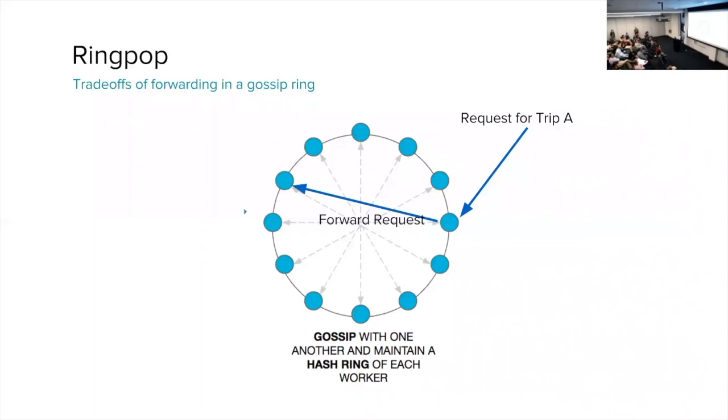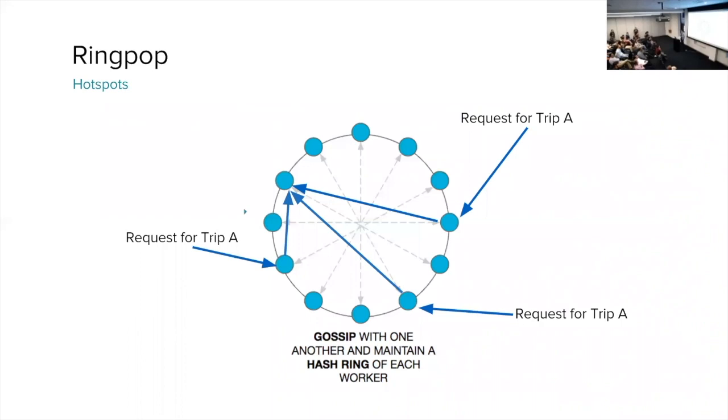This is a symptom of RingPop's eventual consistency. Another trade-off we make is hotspots can occur. A single trip must be handled by a single worker, so naturally that worker can get overloaded when a single trip starts hitting us really hard. And Node.js applications, which sadly we still use, is particularly bad for this because it's a single thread. So a single badly behaved entity can bring down a worker.